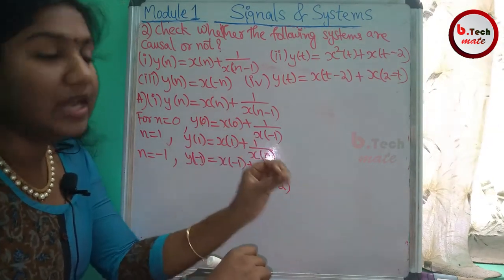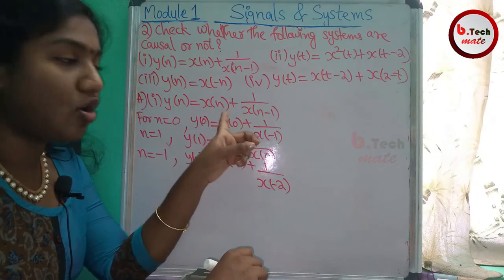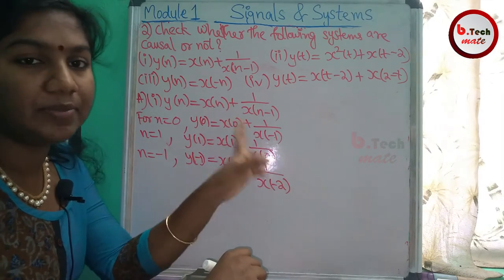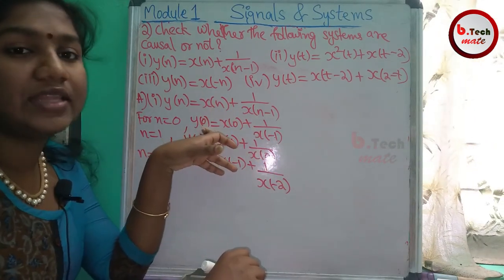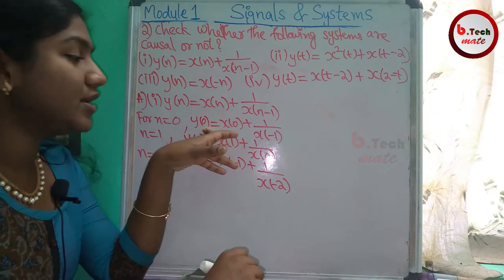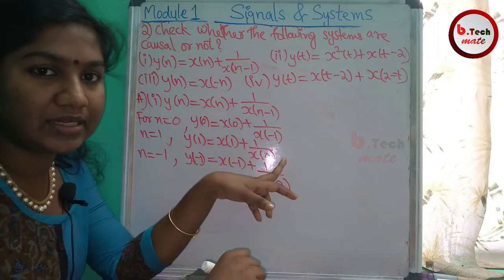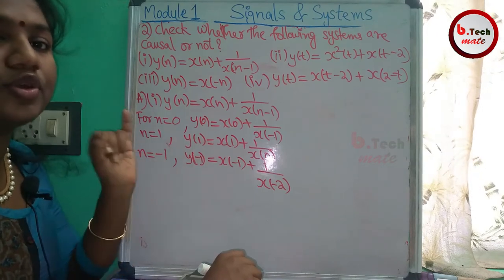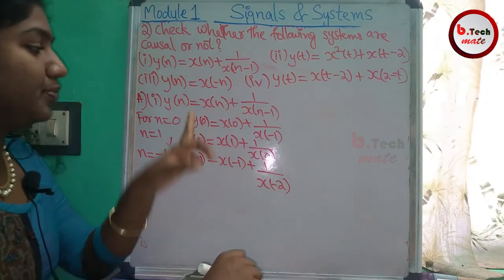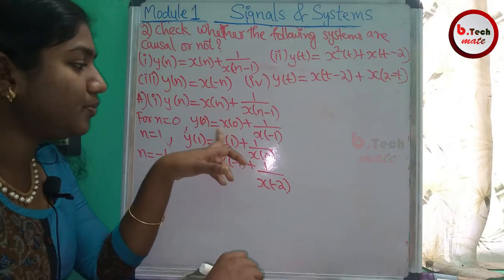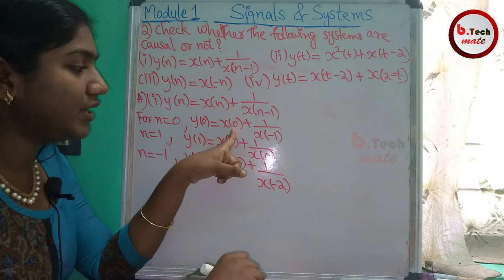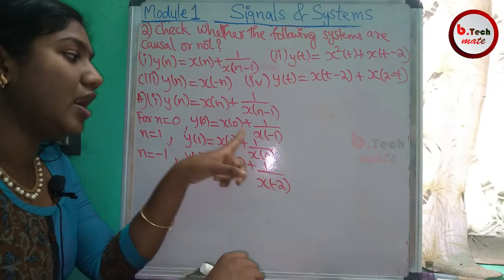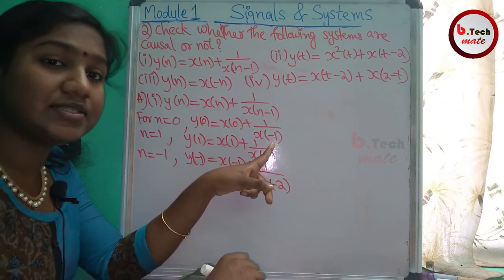If the system is causal, the present output depends only on the present and past values of the input. If the output depends on the present and past values of inputs, it is causal. If the present output depends on a future input, then it is non-causal. In the three conditions, we have positive, negative, and zero values.